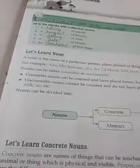Chapter number one. What is a noun? A noun is the name of a particular person, thing, or animal — it's called a noun.